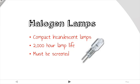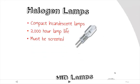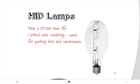Halogen lamps are basically compact incandescent lamps — efficient, lightweight, with a long lifespan compared to incandescent lamps. Light is produced by a heating filament and a small amount of halogen gas in the bulb, producing a brighter white light than the standard incandescent. They typically last about 2,000 hours, but must be screened because they can explode. Finally, HID lamps, or high-intensity discharge lamps, are even more efficient than fluorescent, but their color rendering properties are pretty limited. These are usually used in outdoor and industrial spaces.